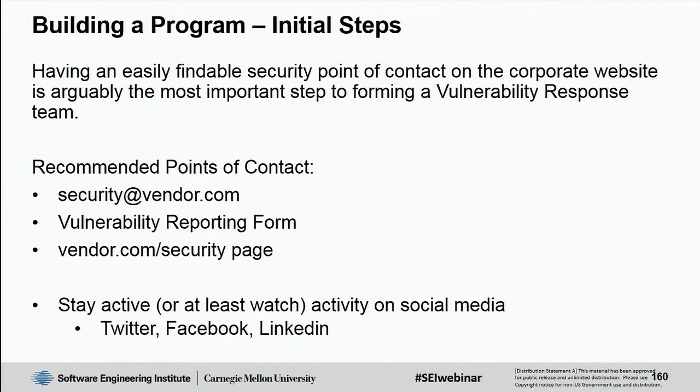The very first step is making it possible for a reporter to actually report a security vulnerability to you. Setting up an email alias — security@yourvendordomain.com — is number one. Even if you use another address, we highly recommend having a security@ address because that's what everyone will try first. If you're a large manufacturer or software vendor, you might want a vulnerability reporting form so reports go directly into a ticketing or bug tracking system.